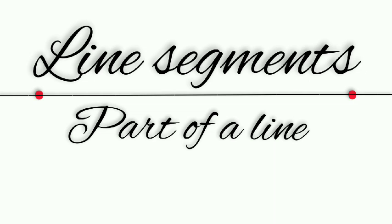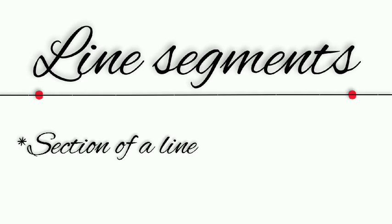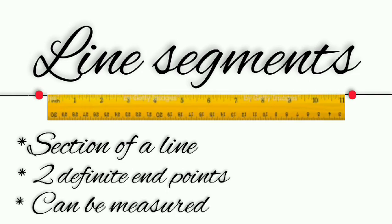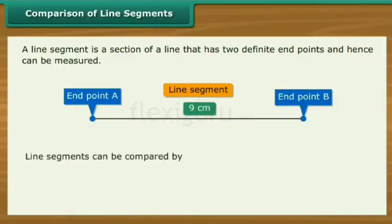Comparison of line segments. A line segment is a section of a line that has two definite endpoints and hence can be measured. Line segments can be compared by observation, tracing, or measurement. Let us look at each technique in detail.